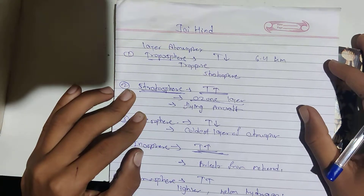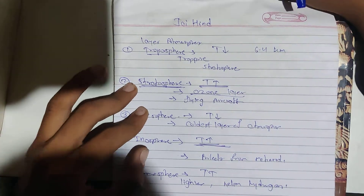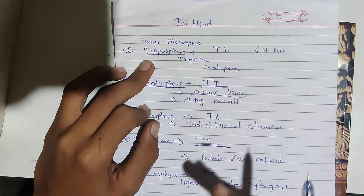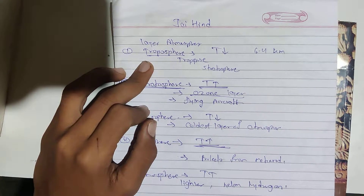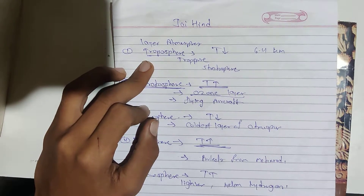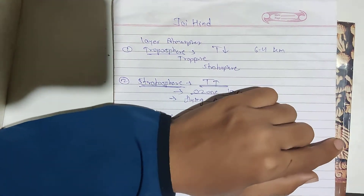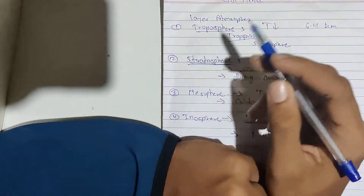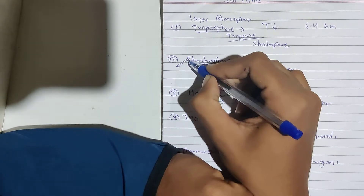Today we discuss the layers of atmosphere. The first layer is the troposphere. In this layer, temperature decreases with increasing altitude. The normal lapse rate is 6.4 degrees per kilometer. The tropopause separates the troposphere from the stratosphere.